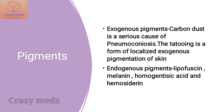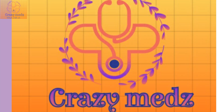Hemosiderin is an iron-containing granule produced when there is a systemic overload of iron. The accumulation of hemosiderin in organs and tissues is called hemosiderosis.